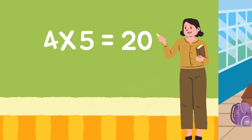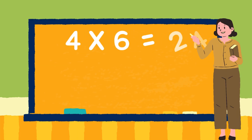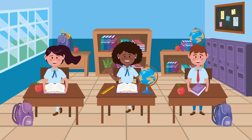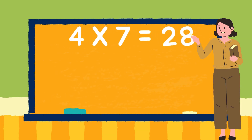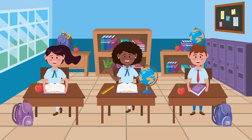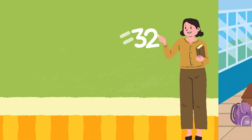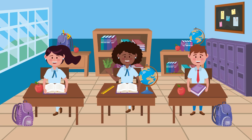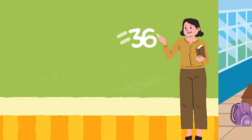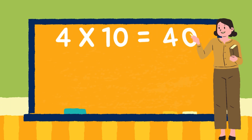Four five is 20. Four six is 24. Four seven is 28. Four eight is 32. Four nine is 36. Four ten is 40.